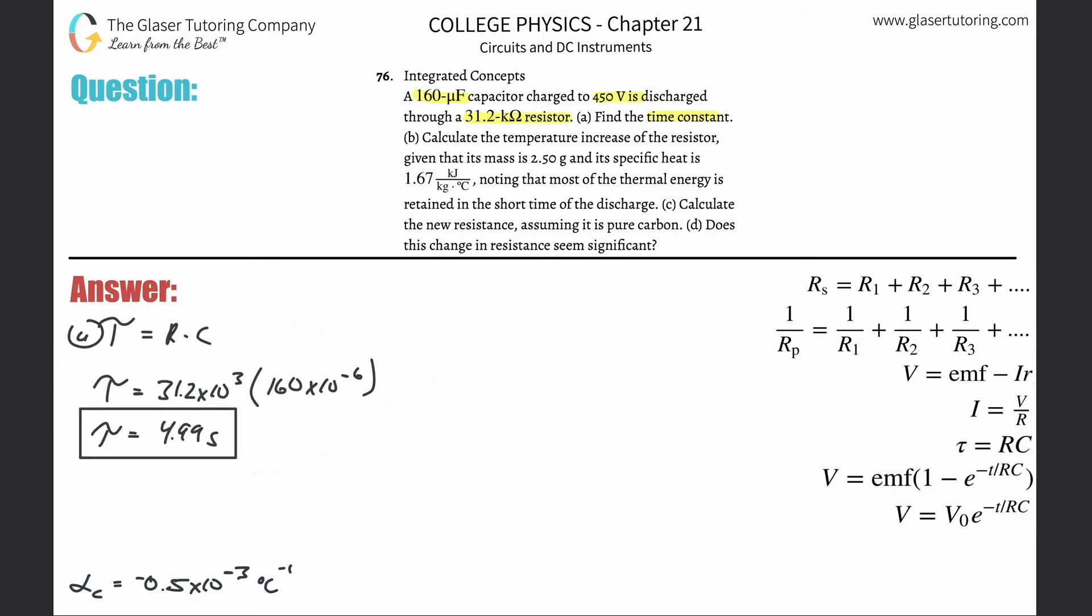Let's take a look at letter B. It says calculate the temperature increase of the resistor, given that its mass is 2.5 grams and its specific heat is 1.67 kilojoules per kilogram degree Celsius, noting that most of the thermal energy is retained in the short time of the discharge.